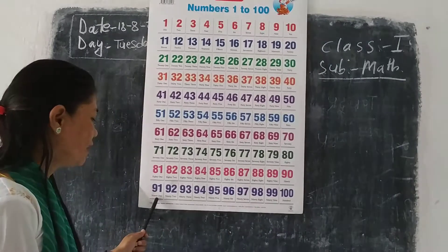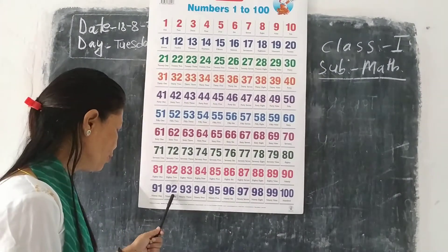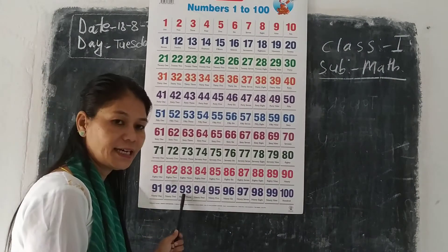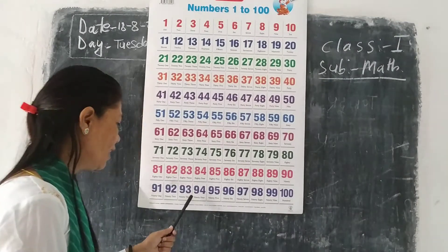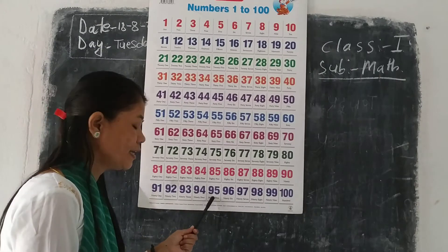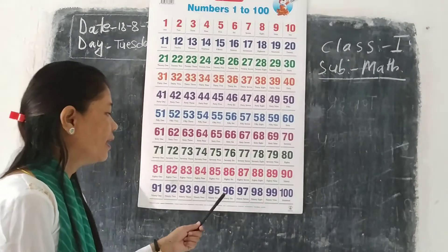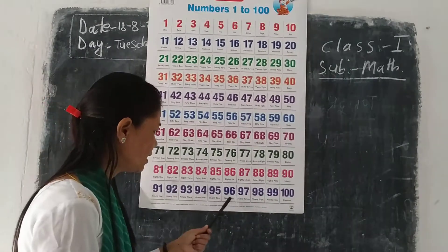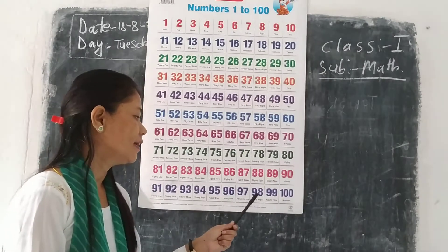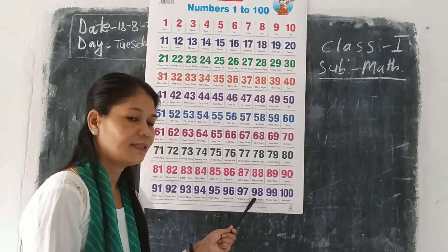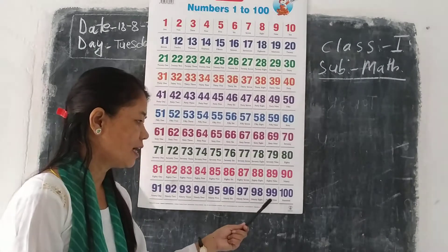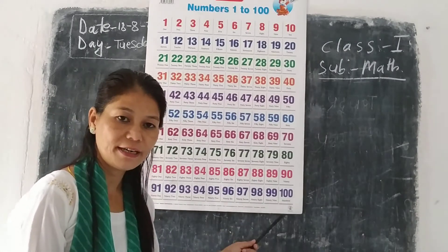90, 91, 92, 93, 94, 95, 96, 97, 98, 99, 100.